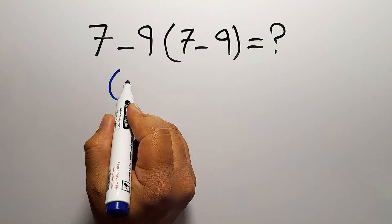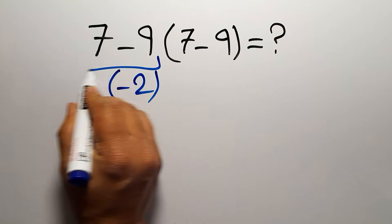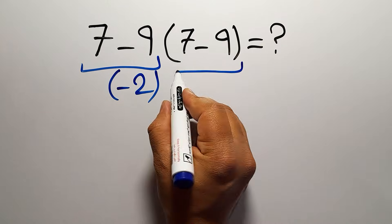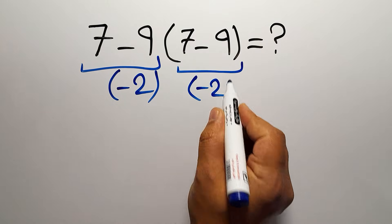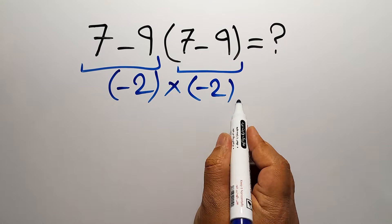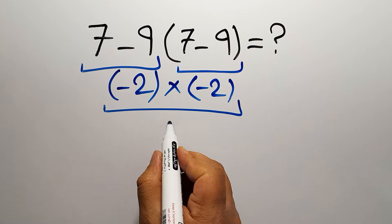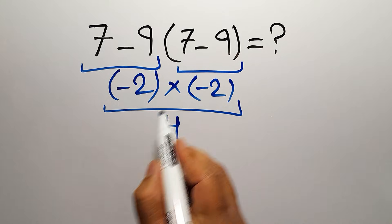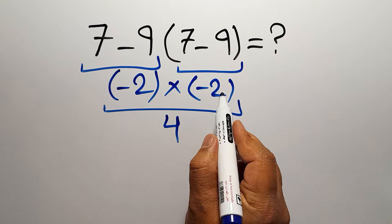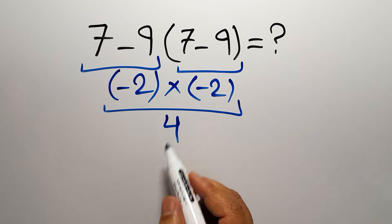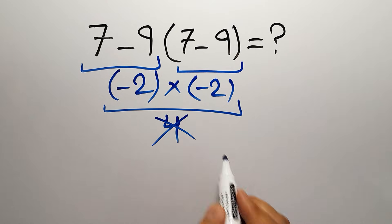7 minus 9 gives us negative 2 and here we have again 7 minus 9 which gives us negative 2. So negative 2 times negative 2 and this is equal to just 4 because negative times negative gives us positive and 2 times 2 gives us 4. So 4 is our answer but this answer is not correct.